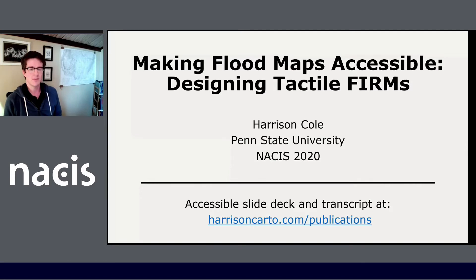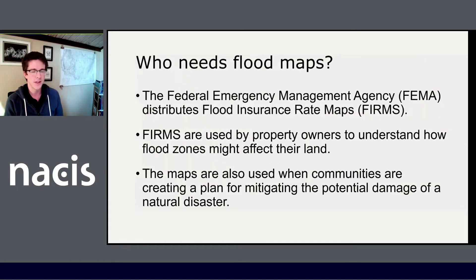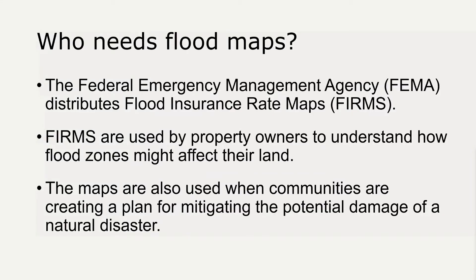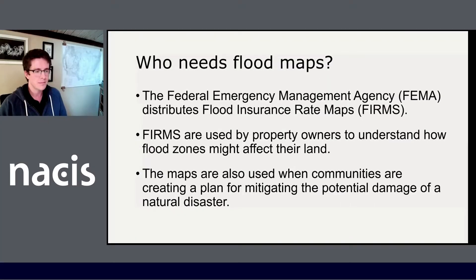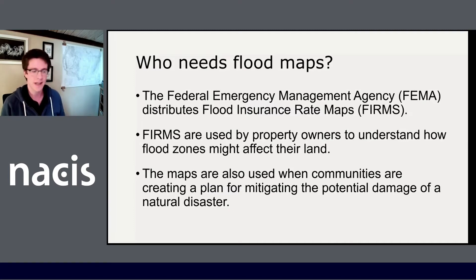I'm looking at a pretty specific scenario for creating accessible maps, which is making FIRMs accessible. FEMA distributes these maps called FIRMs, which are flood insurance rate maps. They most of the time help people understand what sort of flood insurance they need to buy. They show portions of cities around the U.S. and show which parts of the cities are covered by flood zones.